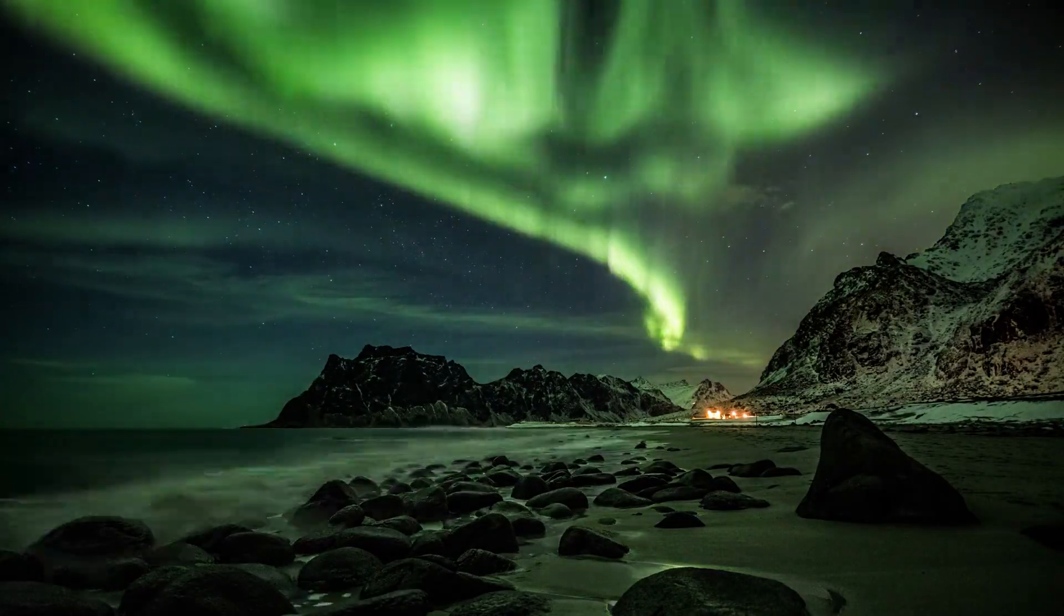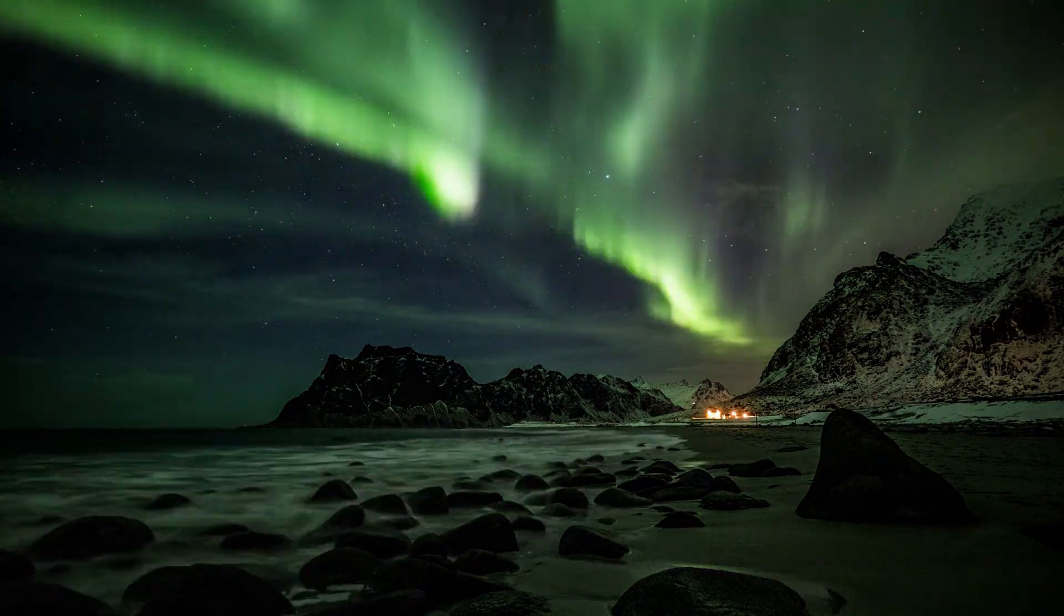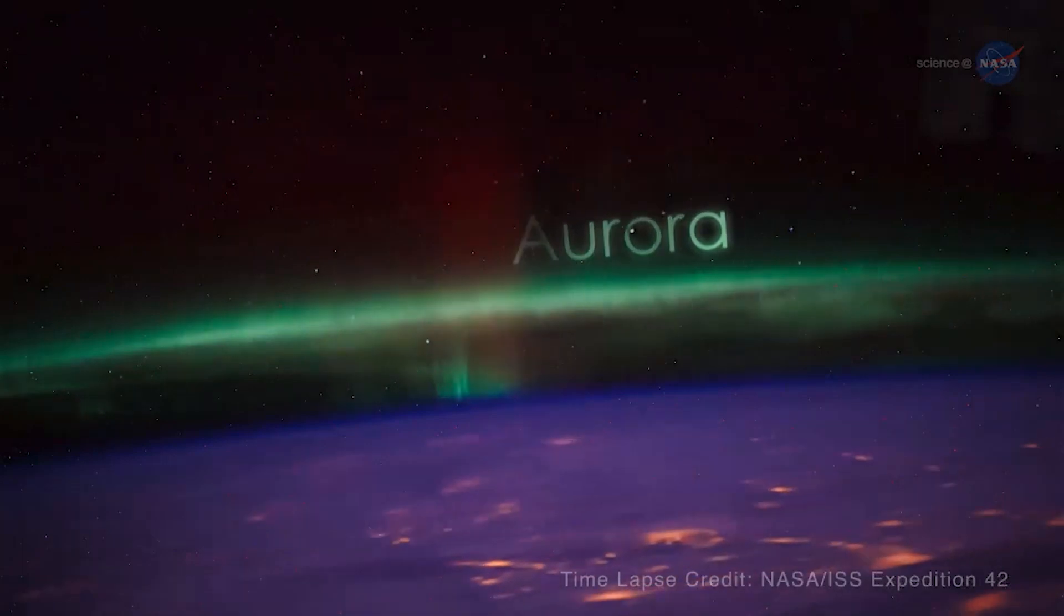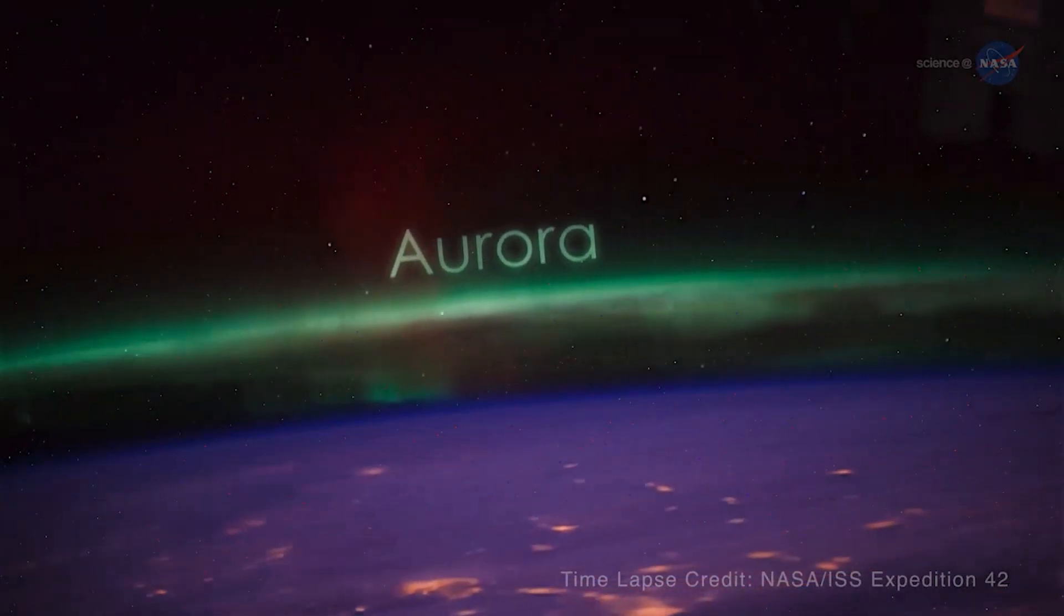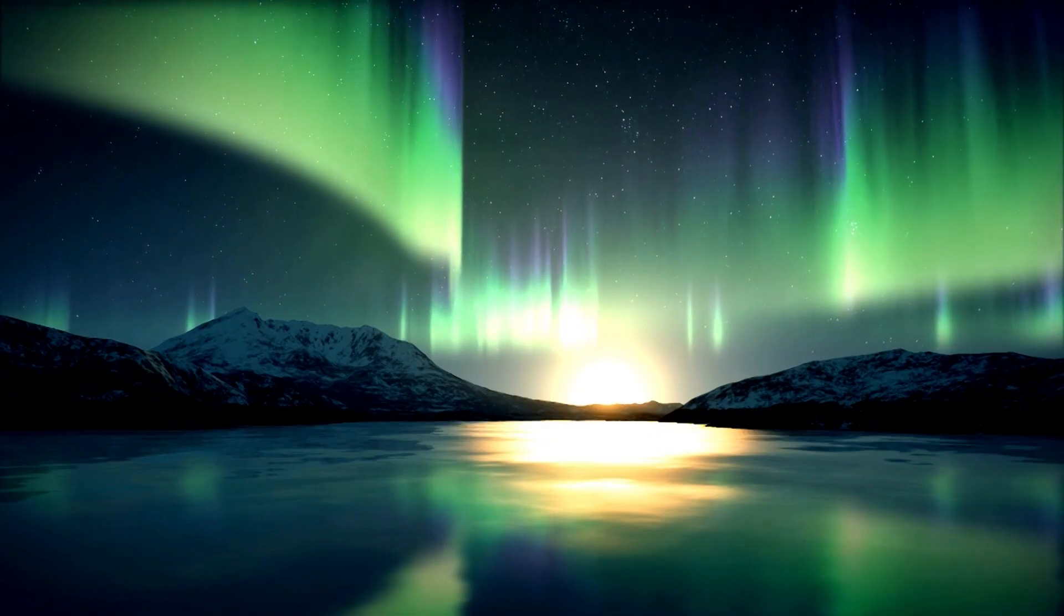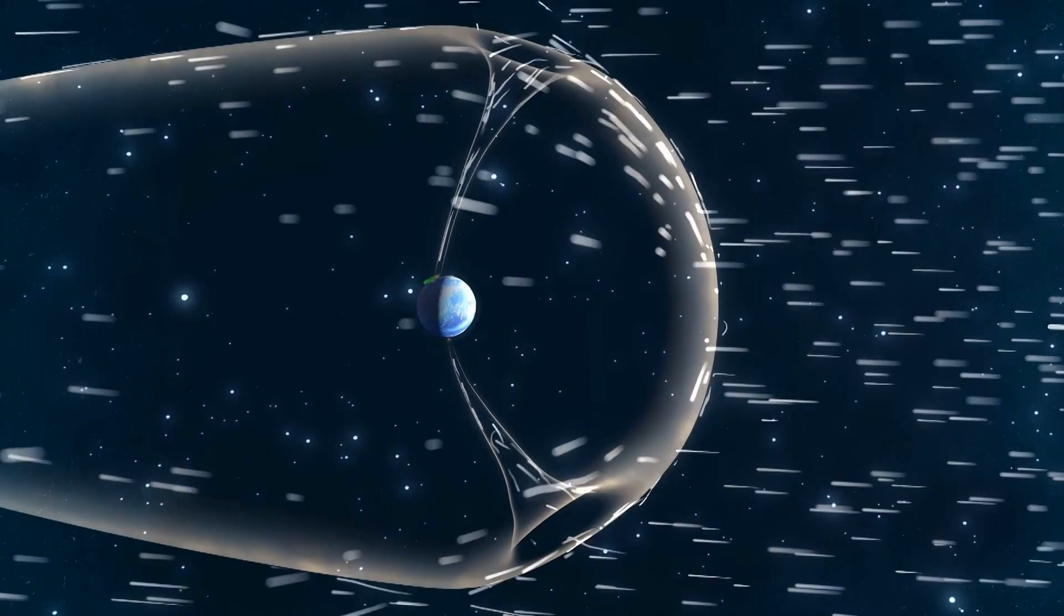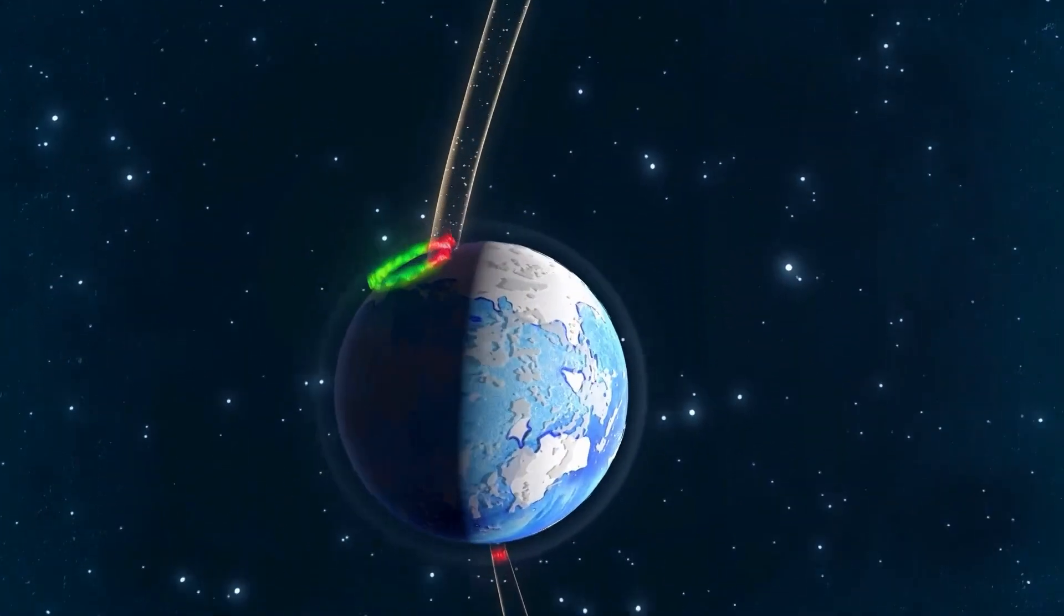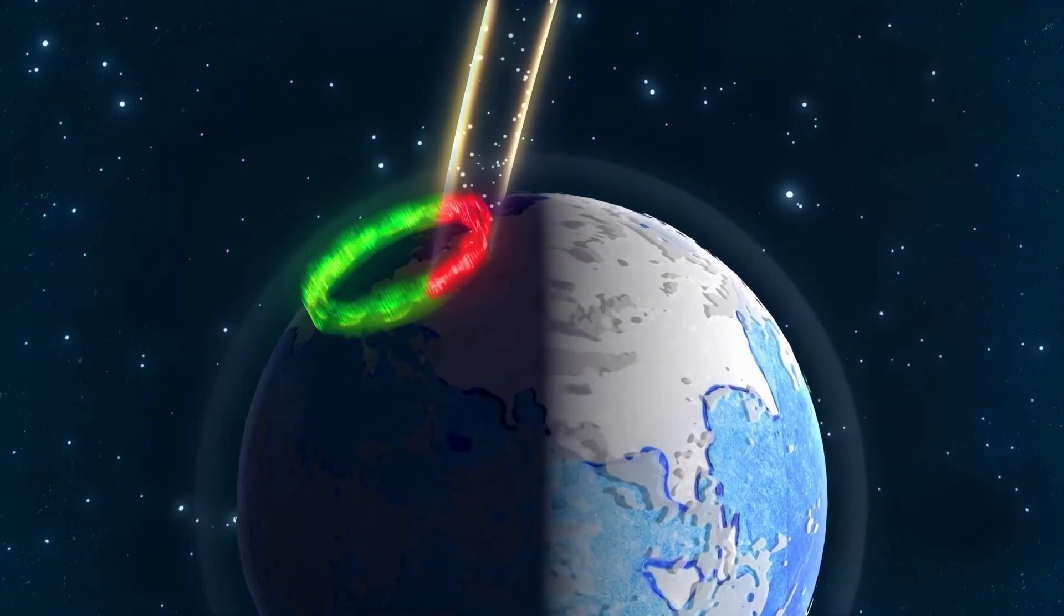The impact of the foreshock on the Earth's magnetic field can be both beautiful and destructive. The auroras, or the northern and southern lights, are one of the most beautiful effects of the foreshock. These natural light shows are caused by the interaction between the solar wind particles and the Earth's magnetic field.